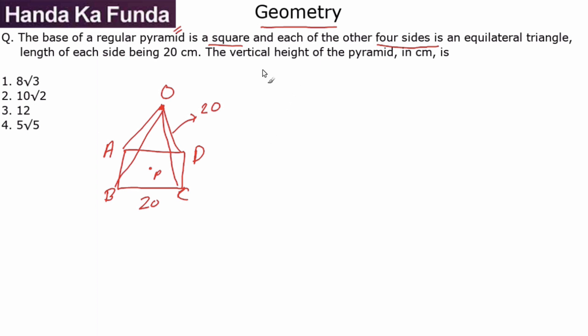Now I'm asked to find out the vertical height of the pyramid or essentially the value of OP. Before finding OP, what I'll try to do is find out the value of BP because once I have that, this will be a right angle triangle.